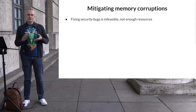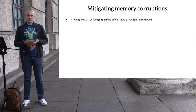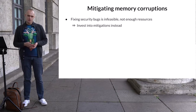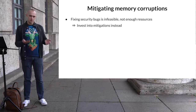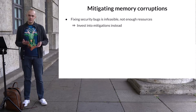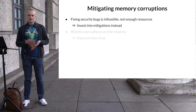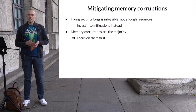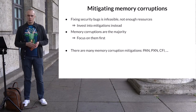Unfortunately, finding and fixing all security bugs is impossible — there are just not enough resources for that. Instead, it makes sense to dedicate these limited resources to implementing mitigations. A mitigation is something that prevents bugs from being exploitable. Since the majority of security bugs are memory corruptions, it makes sense to start with them, and there are a number of mitigations for memory bugs that have already been implemented.